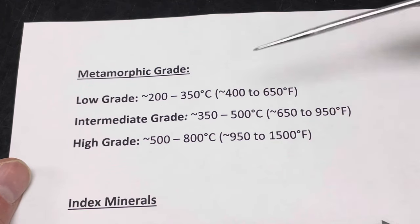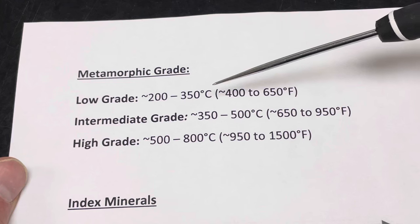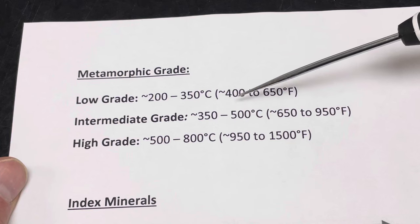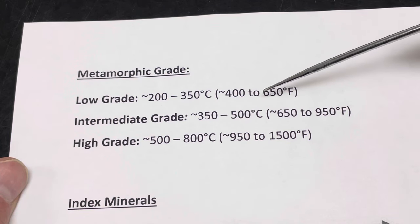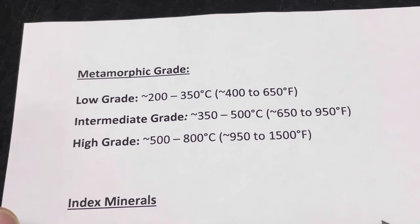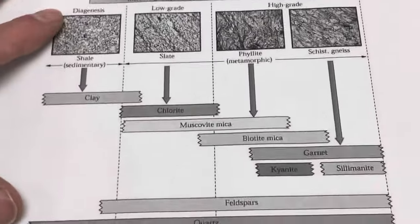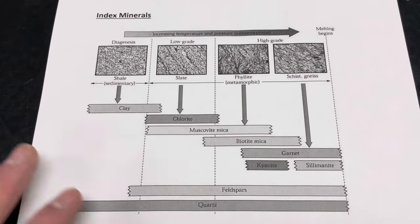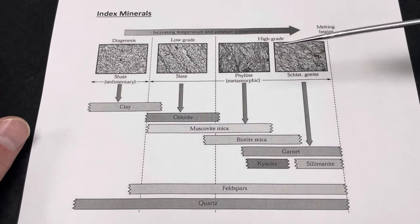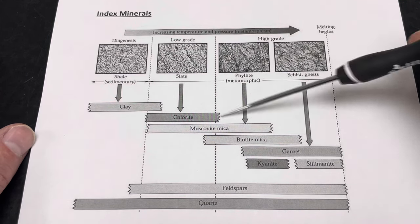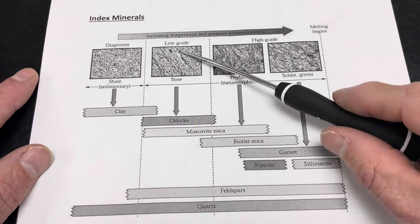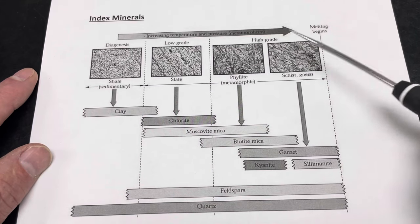Let's say I found a metamorphic rock — I feel good that it's a metamorphic rock, but I have no idea if this rock is low, intermediate, or high-grade, or what kind of temperatures or pressures the rock was subjected to. To answer that, what we tend to use is this idea of index minerals. What we have here is increasing temperature from left to right — so we can see low-grade, more or less intermediate grade, to high-grade. And then we have a bunch of minerals that we've covered in our mineral series.